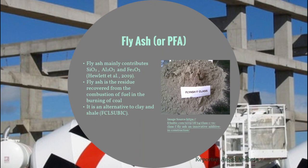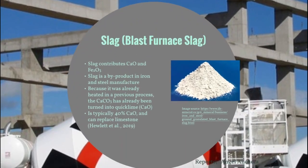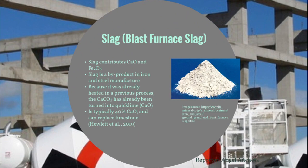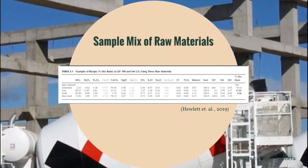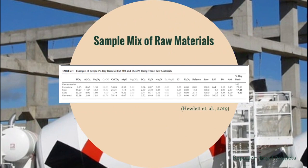Fly ash (PFA) is an eco-friendly substitute for clay and shale, mainly contributing silicon oxide, aluminum oxide, and ferrous oxide. It comes from the residue recovered from coal combustion. Slag or blast furnace slag contributes calcium oxide and ferrous oxide, making it a suitable alternative for limestone. Because it was already heated in a previous process, the calcium carbonate in it was already turned into quicklime. Slag is a by-product of iron and steel manufacture and is typically 40 percent calcium oxide. Gypsum, composed of calcium sulfate and water, is added after grinding the clinkers to increase setting time. The main ingredient is limestone at 78 percent dry basis, followed by clay at 17 percent and sand at 4 percent.